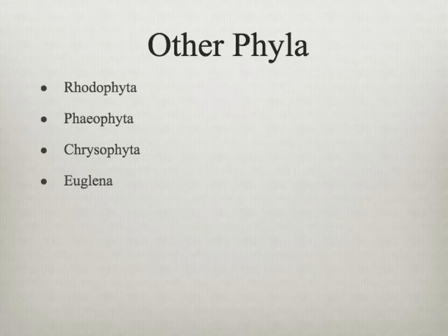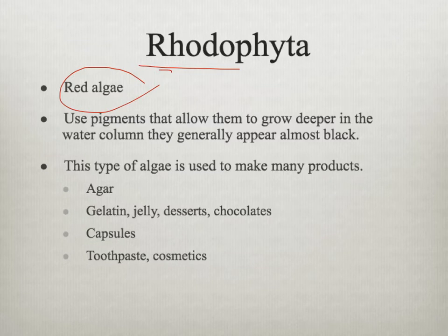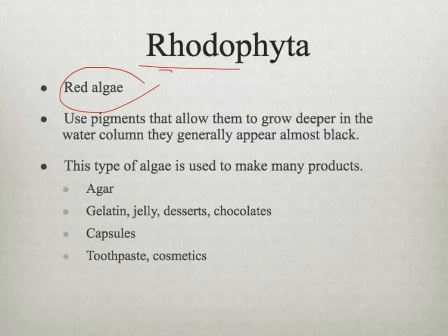Some other phyla we're going to look at: Rhodophyta, Phaeophyta, Chrysophyta, and Euglenophyta. Let's start with Rhodophyta — 'rhod' means red algae. Red algae use pigments that allow them to grow deeper in the water column, and because of the depth at which we find them, they usually appear almost black. This type of algae is used to make many products: agar, gelatin, jelly, desserts, chocolates, capsule coatings for medicines, toothpaste, and cosmetics. We use red algae for a lot of different products.